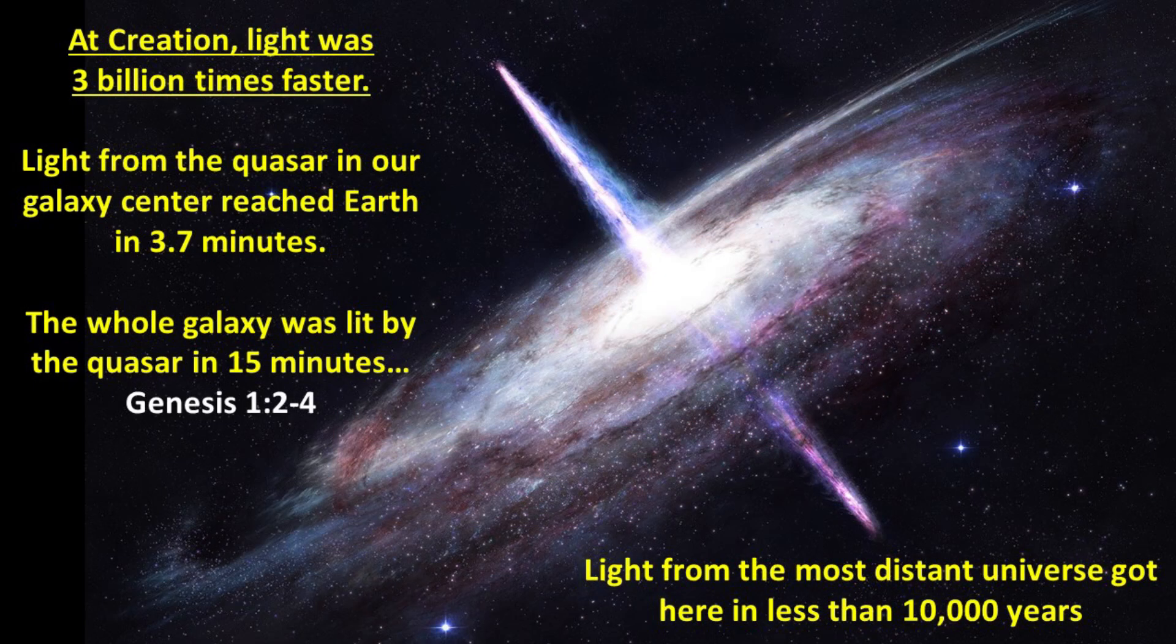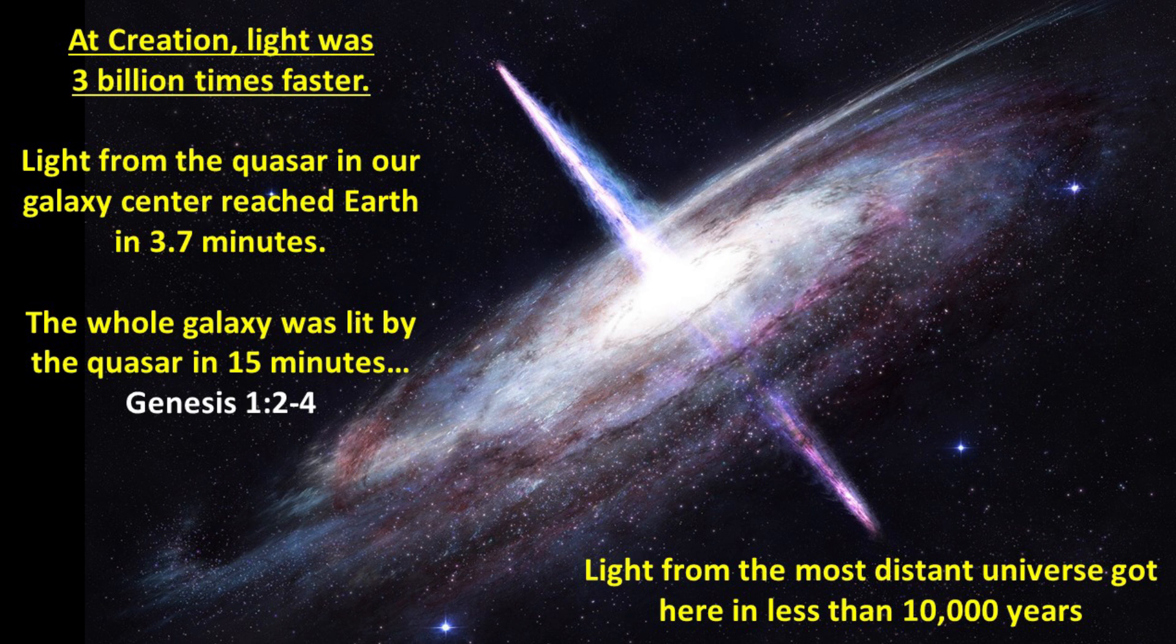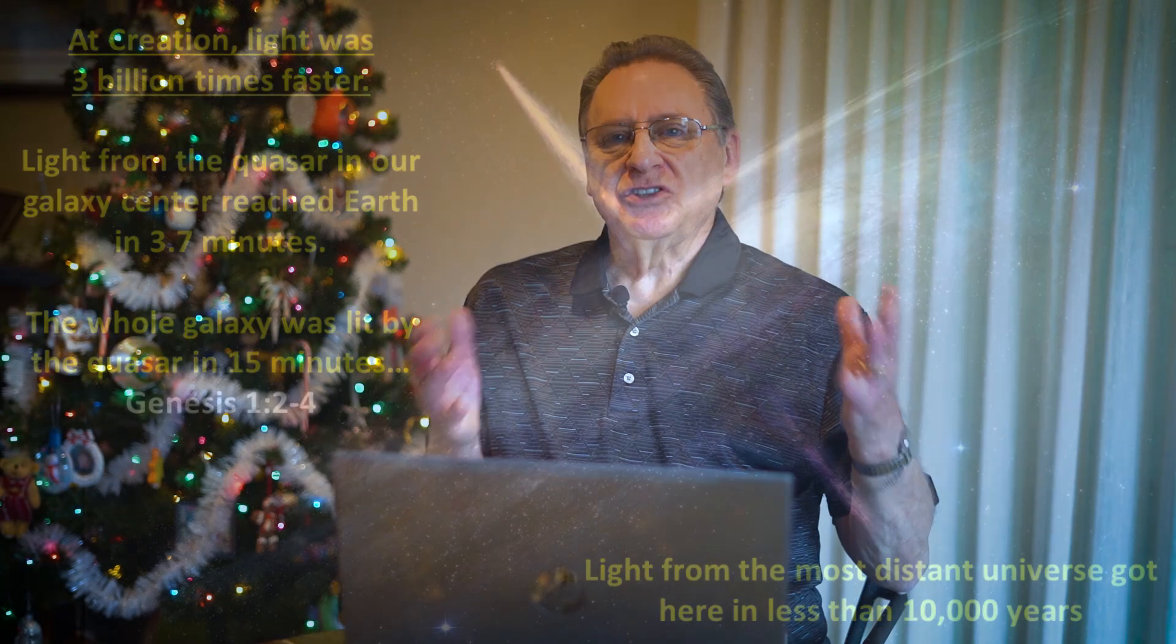As a result, it can be stated that at creation, with almost no stretching or expansion, the speed of light was just over 3 billion times faster than now. Light reached Earth from the quasar at the centre of our galaxy in 3.7 minutes. The whole extent of our galaxy was illuminated in less than 15 minutes by that quasar. This is in line with Genesis 1:2-4. Finally, light from the most distant parts of the cosmos have reached us in less than 10,000 years. So it seems that the Bible might be right scientifically after all. And it's apparent that just one new fact, which had been unappreciated up to this point in time, can totally change the outlook in science. We hope that this session has helped you understand science and the Bible a bit more perfectly. And we trust that it brings you into a deeper relationship with the Lord and the trust in his word. Thank you very much for your time.